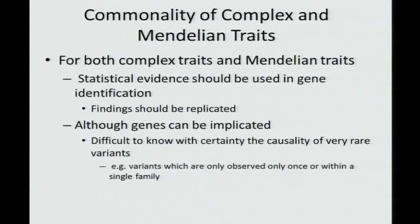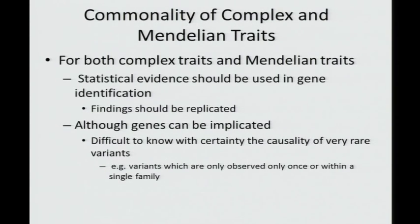One advantage we have right now is that we can look at data on a genome level and don't have to focus on individual genes. This is also true for Mendelian traits, where people would choose their favorite candidate genes within a linkage region, and once they thought they found something, they would stop. Now we're at a huge advantage that we can look at the entire region and don't have to focus on just a particular set of favorite genes.